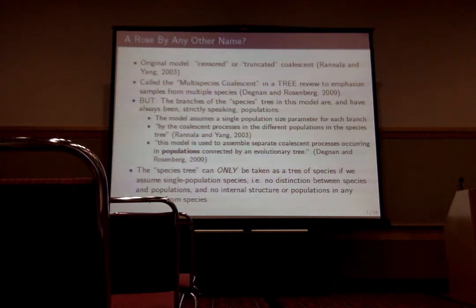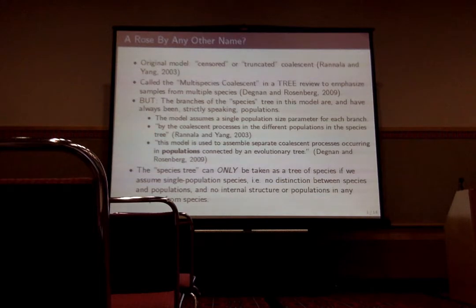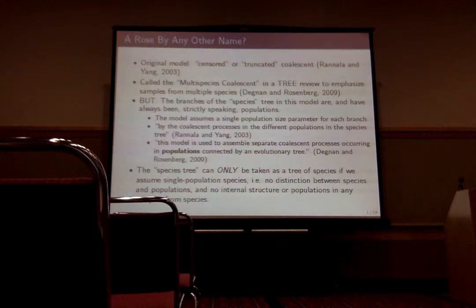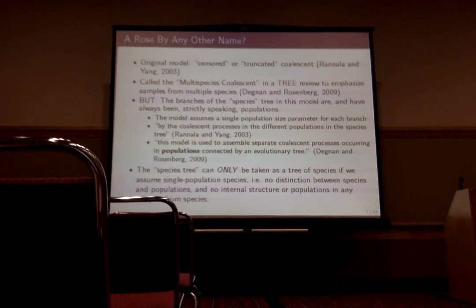And this is a very good description of the process that went on. And it wasn't, as far as we know, until 2009, in the review by Degnan and Rosenberg, that the term 'multi-species coalescent' was applied to the model. This was to emphasize that the samples constituting the data for the model came from many different species, as opposed to the standard coalescent, which is just one species.